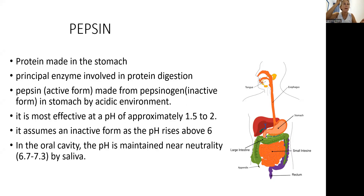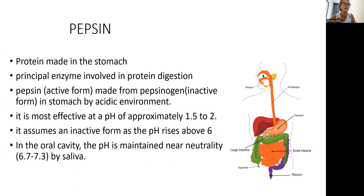Let's look at pepsin. Pepsin is made in the stomach. It's actually a protein. It's made as pepsinogen in an inactive form, but in the acidic environment created by hydrochloric acid, pepsinogen in the stomach is converted into pepsin, the active form, and remains active in an acidic environment between pH 1.5 and 2. It becomes inactive when the pH rises above 6. The environment in the mouth is determined by saliva, and the acidity of saliva is between 6.3 and 7.3.